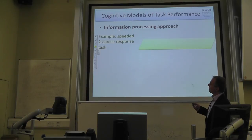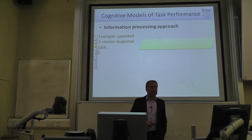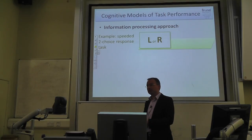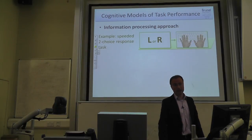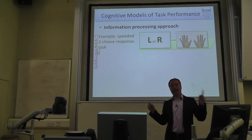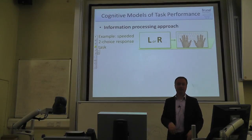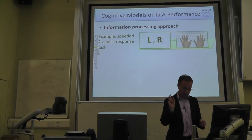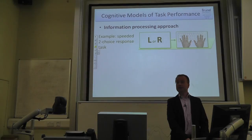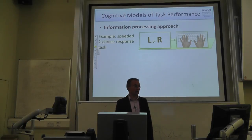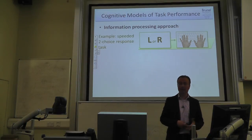Here's a very easy example — a speeded two-choice response task. You see either the letter L or R on screen. If you see an L, press as quickly as possible with your left index finger on the Z key. If you see an R, press with your right finger the M key. You see a letter, respond, next trial, and so on — repeated for half an hour or an hour — and we measure response time and accuracy.